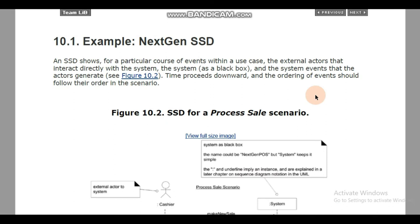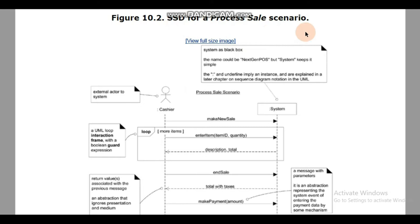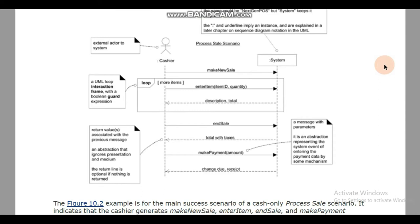This is a system sequence diagram for a process sale scenario. We have one actor here — the cashier — and one actor here — the system. What happens is there is a message about making a new sale. The 'make new sale' message is sent towards the system. The next message is 'enter item', where the cashier has entered into the system with parameters: item ID and quantity.